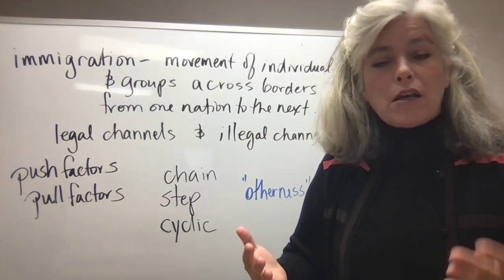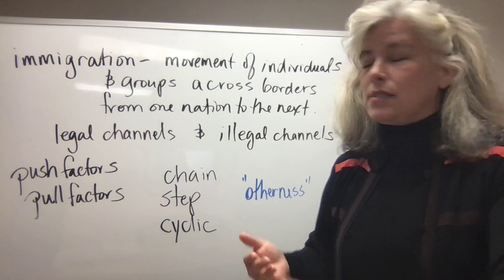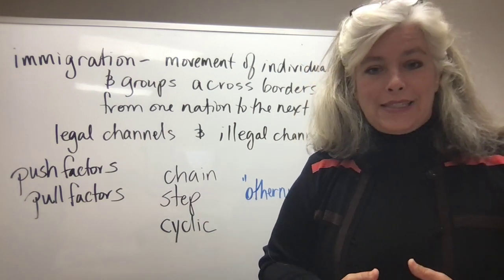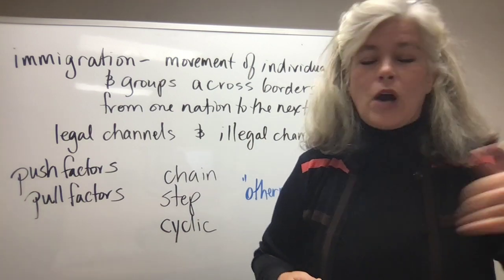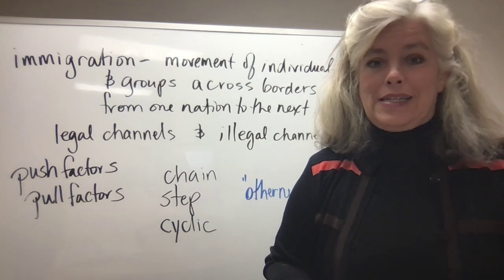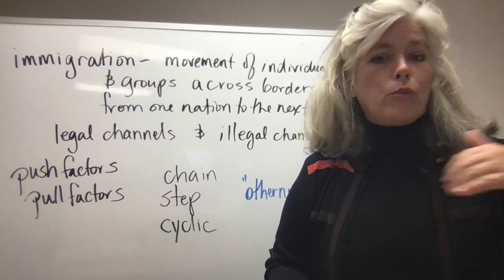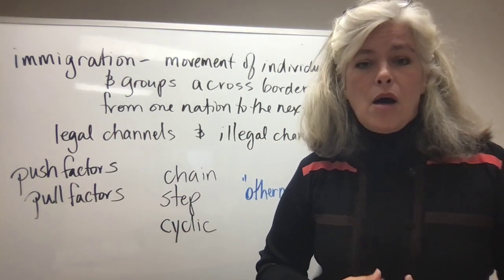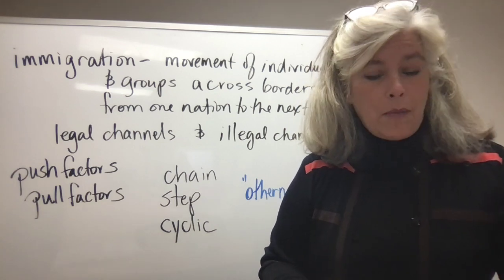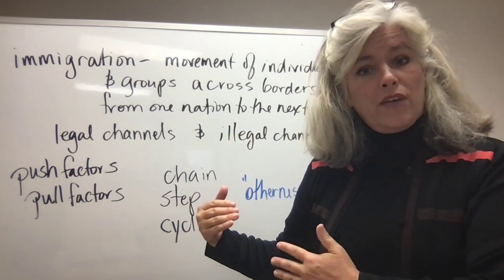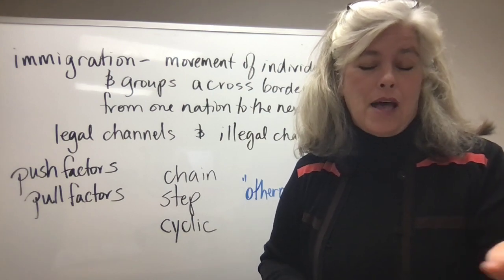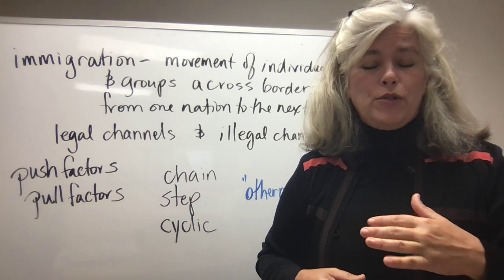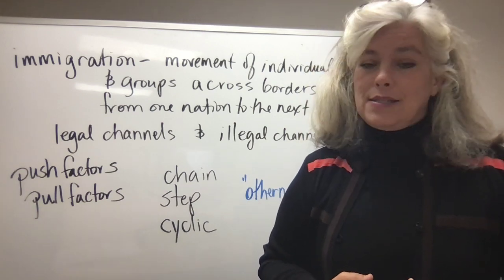Immigration is simply the movement of people or groups from one country to another — across national borders. We're not talking about going from Arkansas into Missouri; we're talking about going from Canada into the United States, or from Mexico, or from Egypt. Migration takes a variety of forms, including permanent migration, where you leave citizenship from a previous country behind and become a naturalized citizen, which is the term used in the United States.